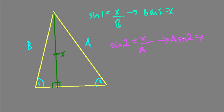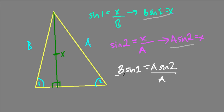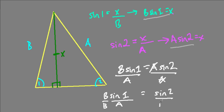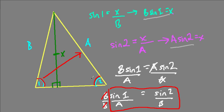Multiplying both sides by A, I get A times the sine of angle 2 equals X. So if X equals A times the sine of angle 2, and X also equals B times the sine of angle 1, then B times the sine of angle 1 equals A times the sine of angle 2. We can manipulate this: divide both sides by A and by B, and the A's and B's cancel, so we get the sine of angle 1 over A equals the sine of angle 2 over B.